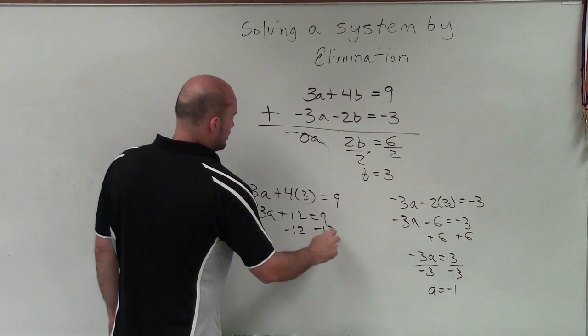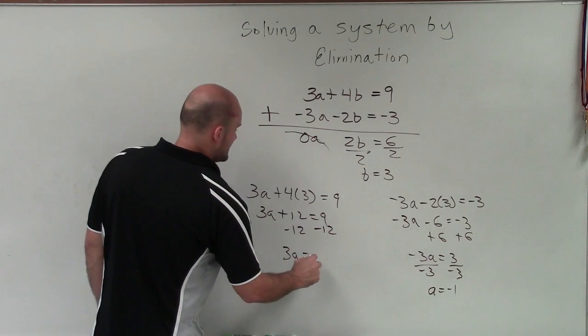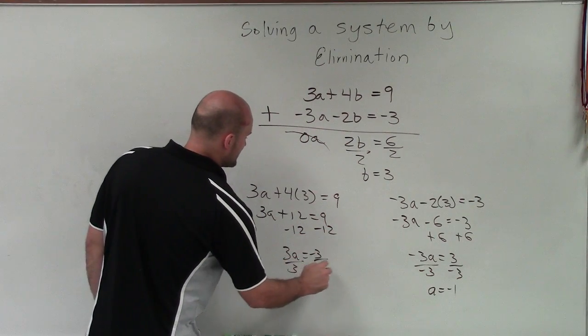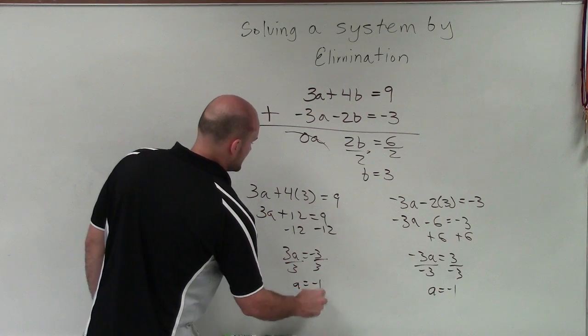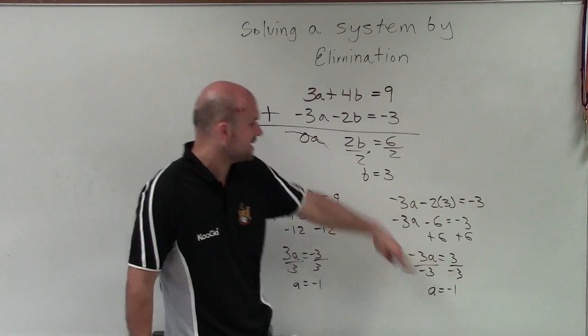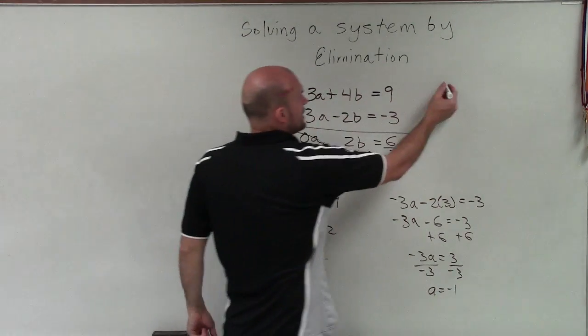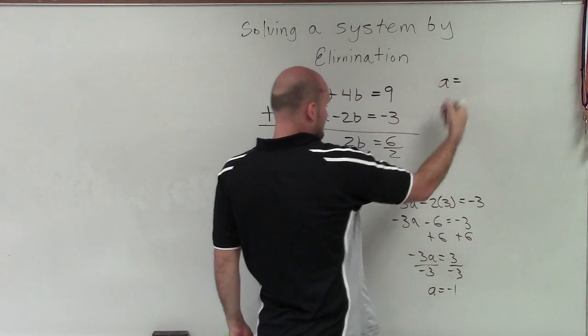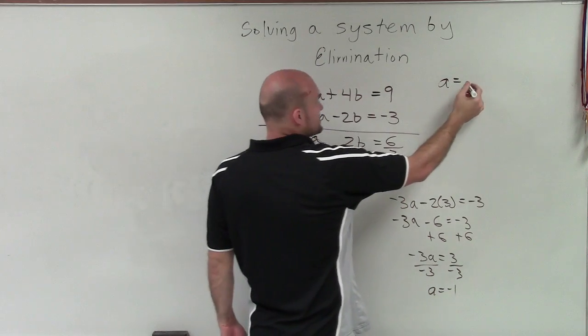Over here, I'll subtract 12. 3a equals negative 3. Divide by 3, and a equals negative 1. So therefore, ladies and gentlemen, you can see that when a equals negative 1 and b equals 3, that is going to be the solution of my system of equations.